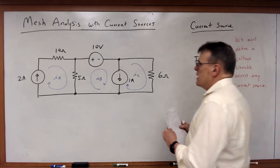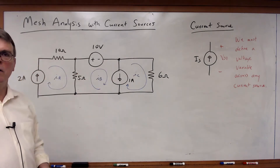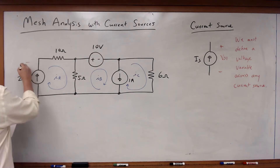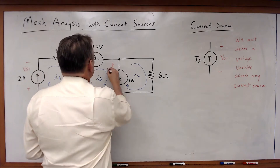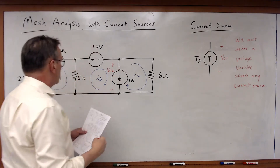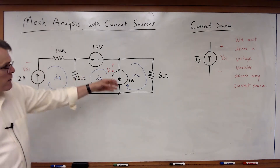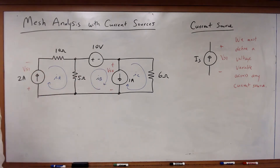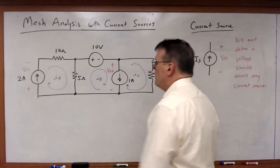In this case I've got two current sources, so I've got to define a voltage variable for each if I'm going to write a valid KVL equation. I'm going to call this VS1 and this VS2. The polarities of VS1 and VS2 are completely arbitrary — they happen to follow the passive sign convention, but I could just as easily have written them the other way around. It would not have made one bit of difference.